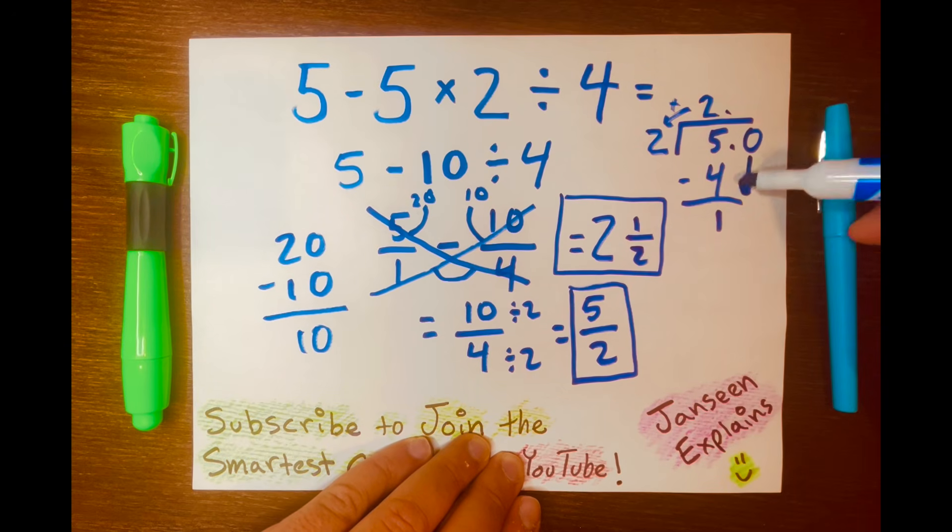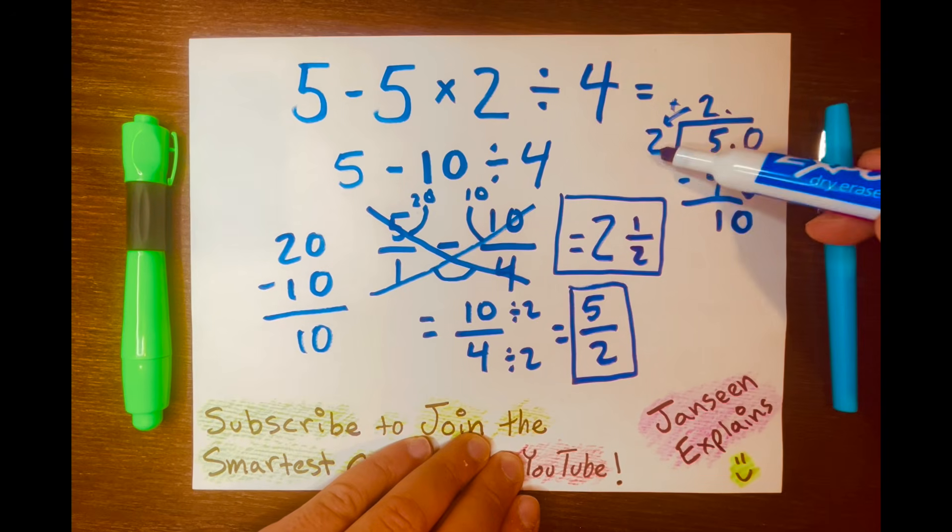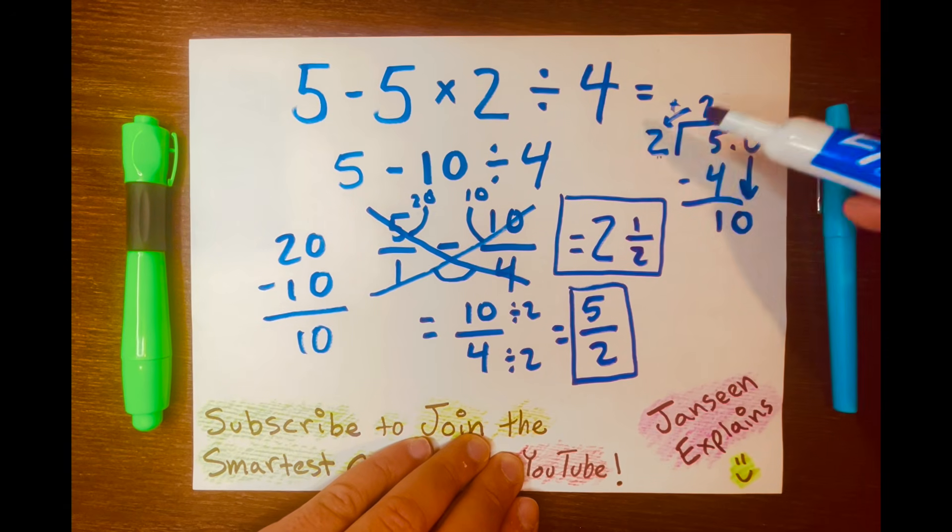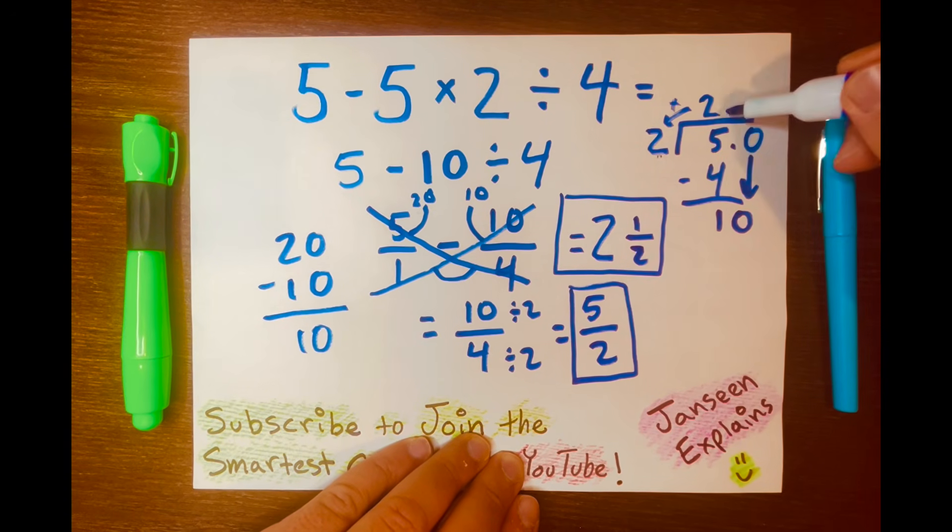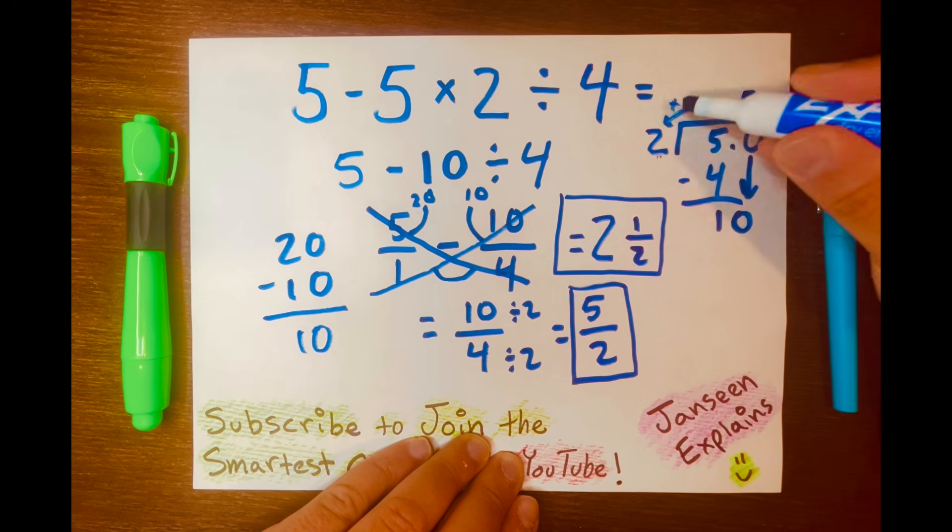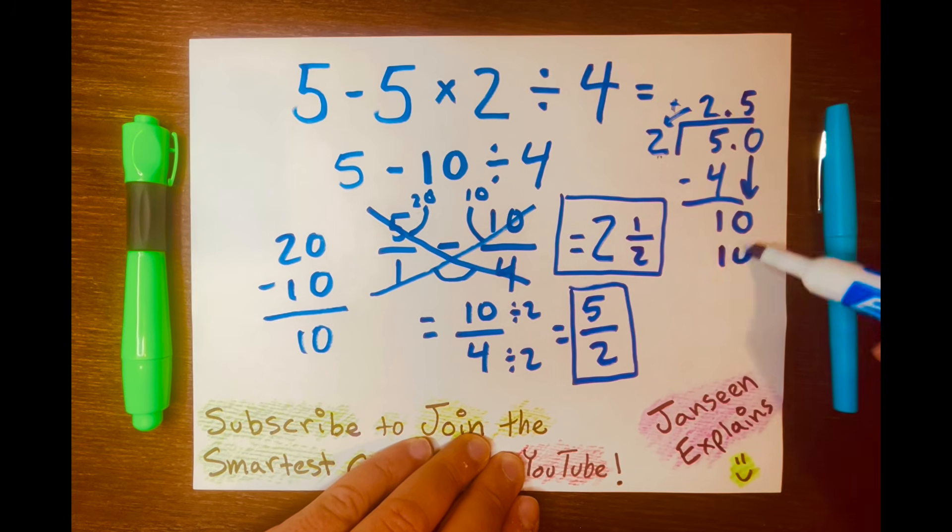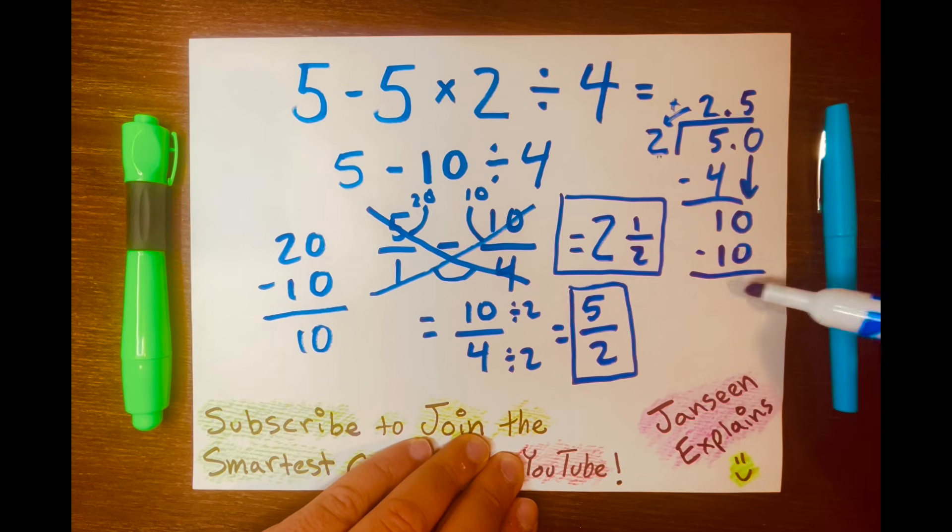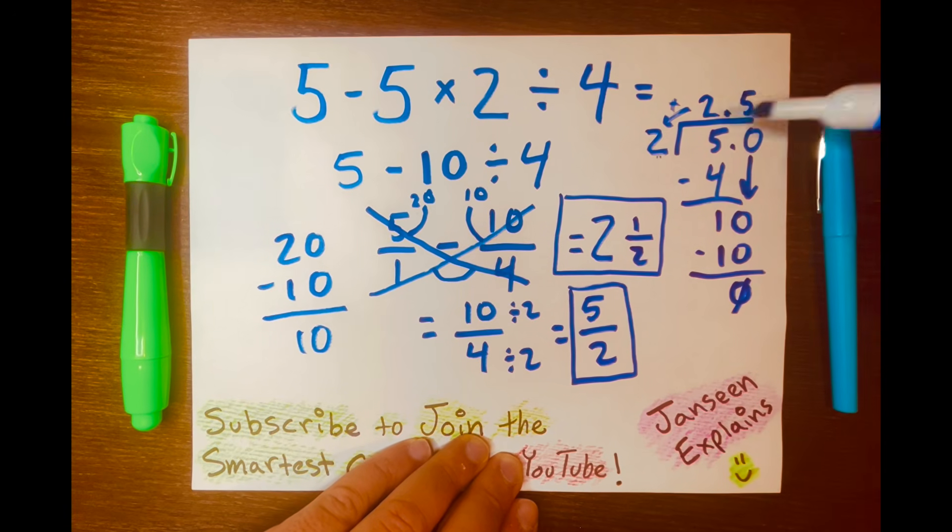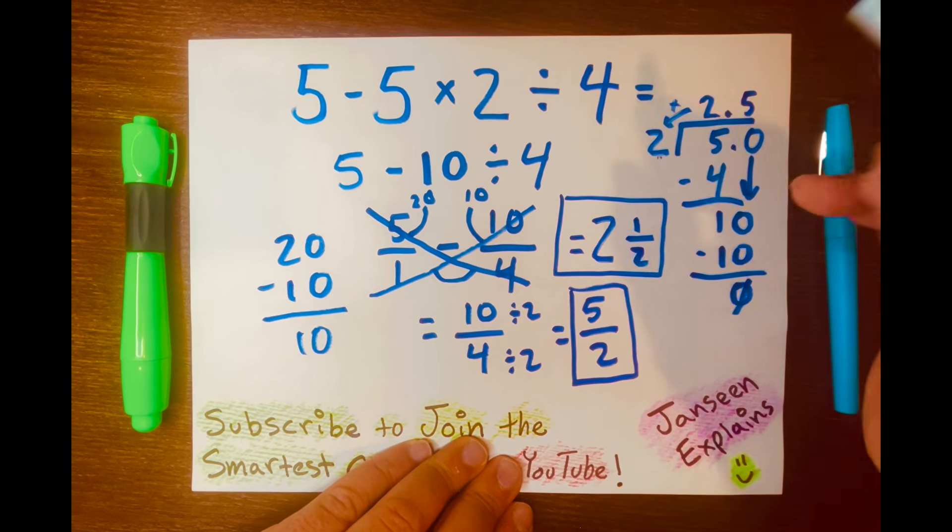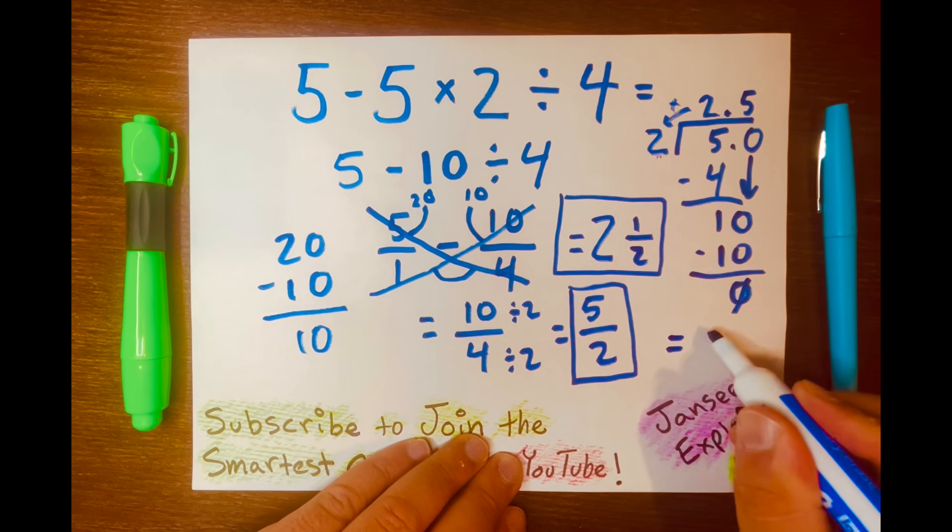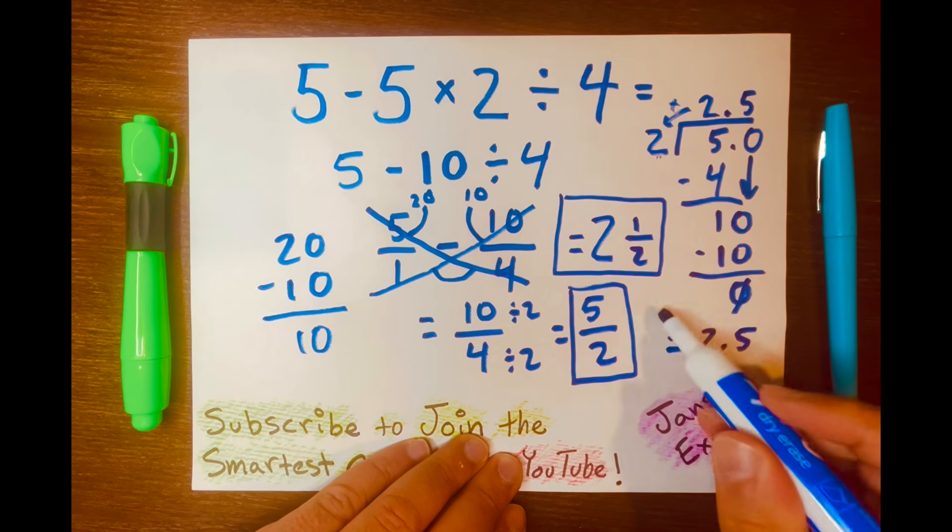We bring it down. Give that 0 to the 1. Now the 1 becomes a 10. How many times can 2 fit into 10? 5. And 5 times 2 equals 10. And we subtract, 10 minus 10 equals 0. So that's how you get your 2.5 as the answer. And I'll write it here, 2.5.